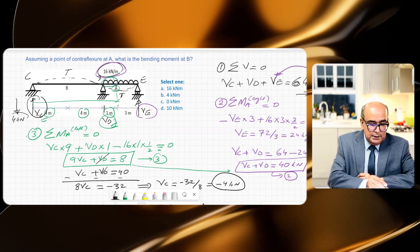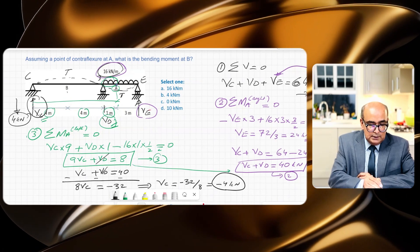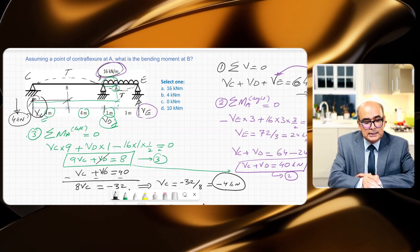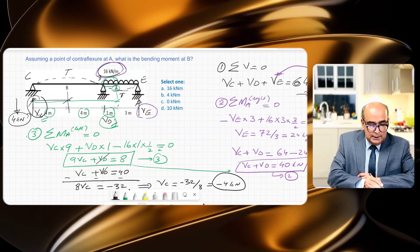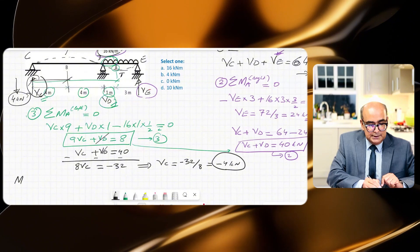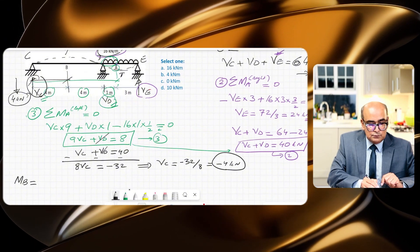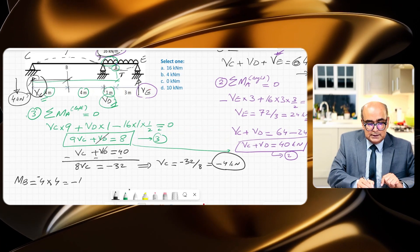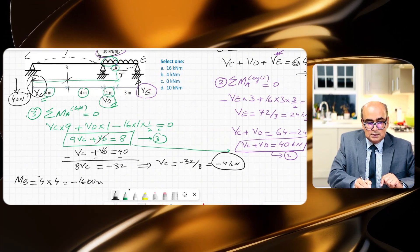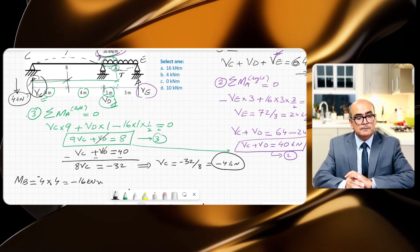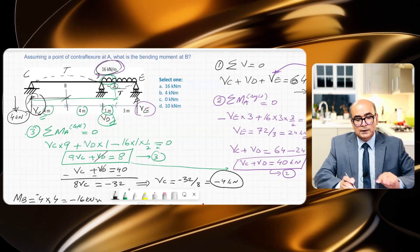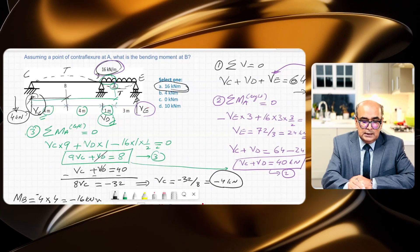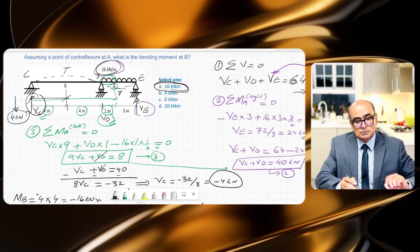It means that we have hogging over here, tension here, and tension at this point. Now this will generate a moment: four times up to B I have four, so four times four, it will generate anti-clockwise moment. So moment at B, MB, is equal to four times four but negative, so it is negative 16 kilonewton meters, that is in hogging. So if I go to the options, the correct option is option A, which is 16 kilonewton meters.